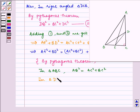In triangle DCE, we have DE square is equal to DC square plus CE square.